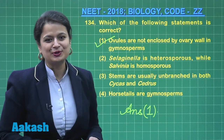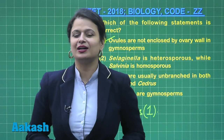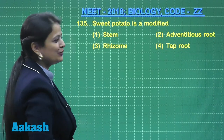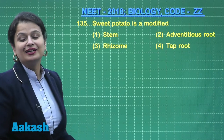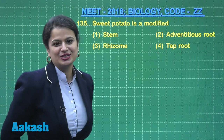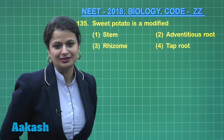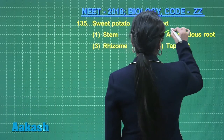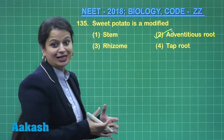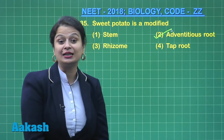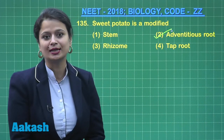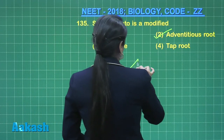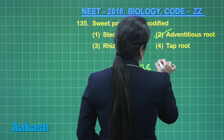Now it is time to discuss question number 135. Sweet potato is a modified — the edible part of sweet potato is the root tuber, and it is a modification of the adventitious root. Don't confuse it with potato. In potato, the edible part is the stem tuber, which is an underground stem. So the right answer for this question is option number two.